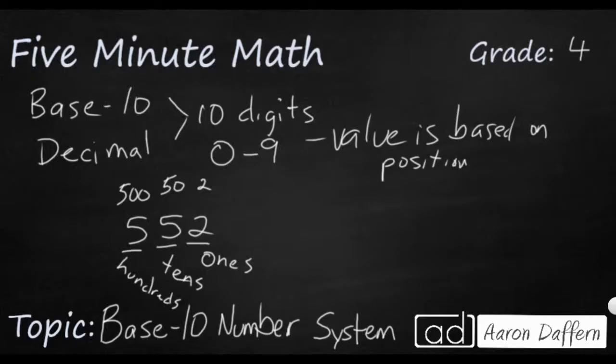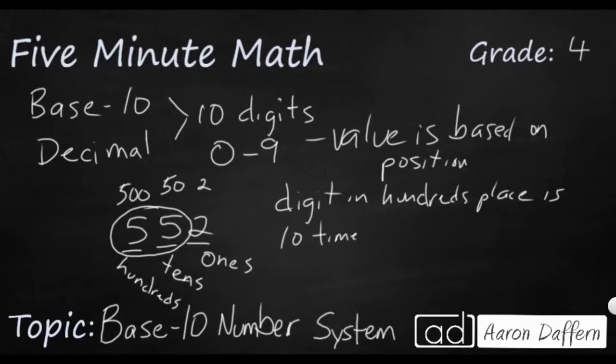But here is the interesting thing about the base 10, or the decimal place value system. Take a look at these two digits right here. When we're looking at those two digits, we can say that the digit in the hundreds place, so we're looking at the first five, we can say it is 10 times the value of the digit in the tens place.